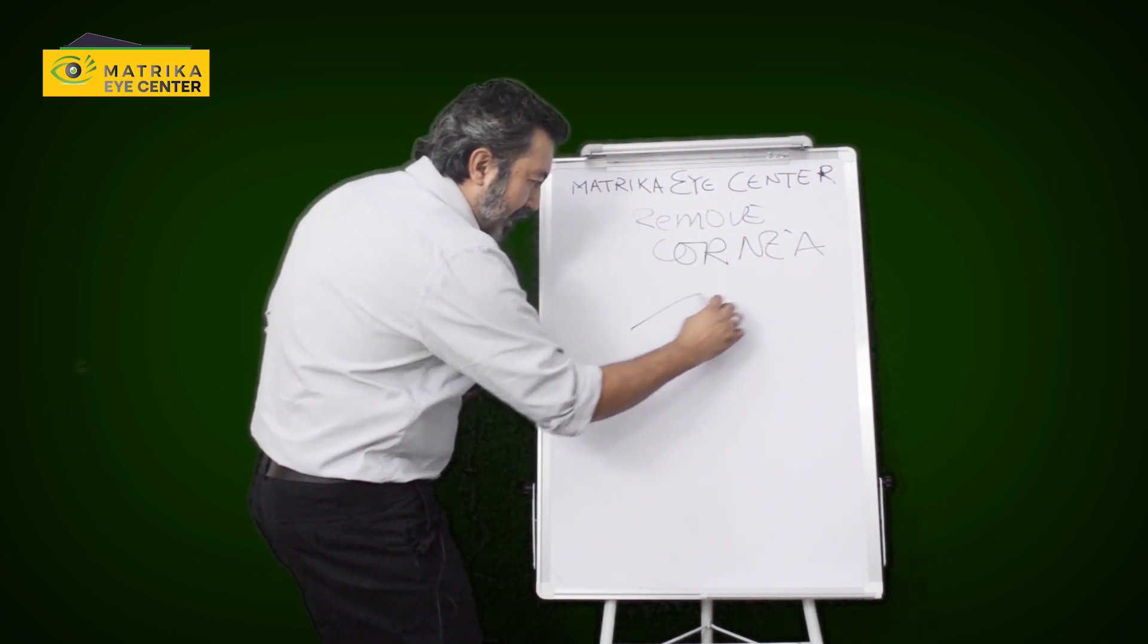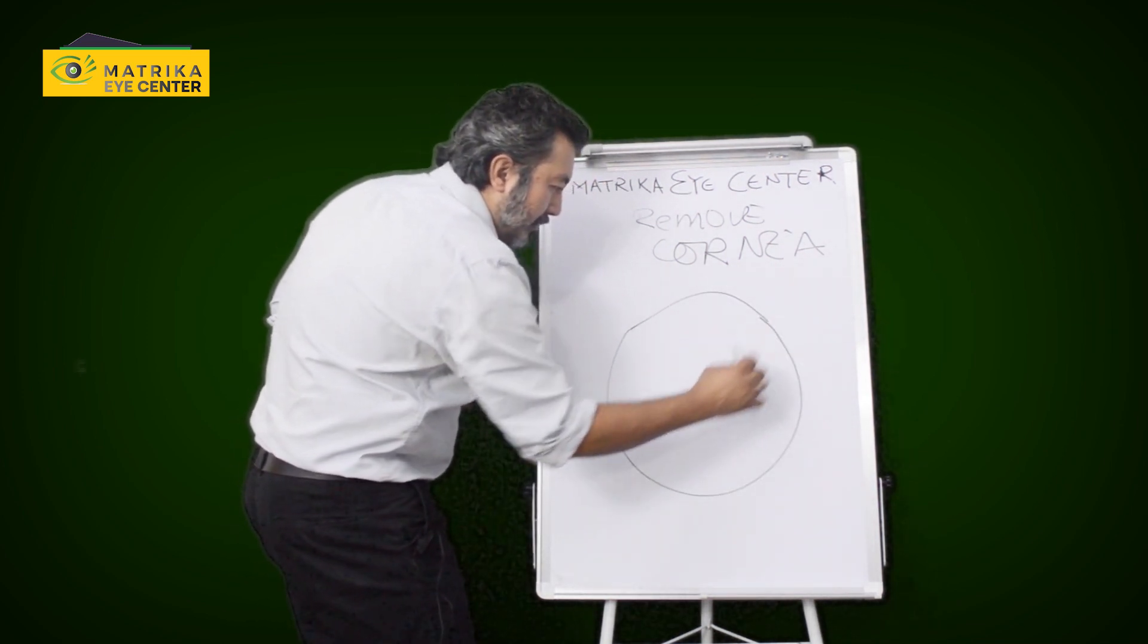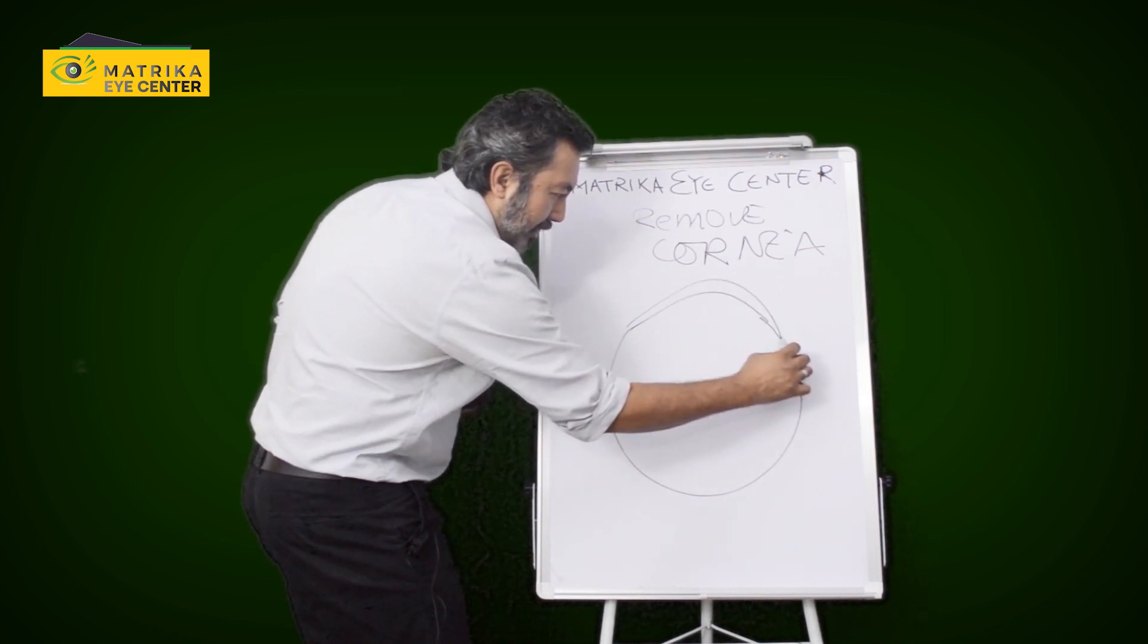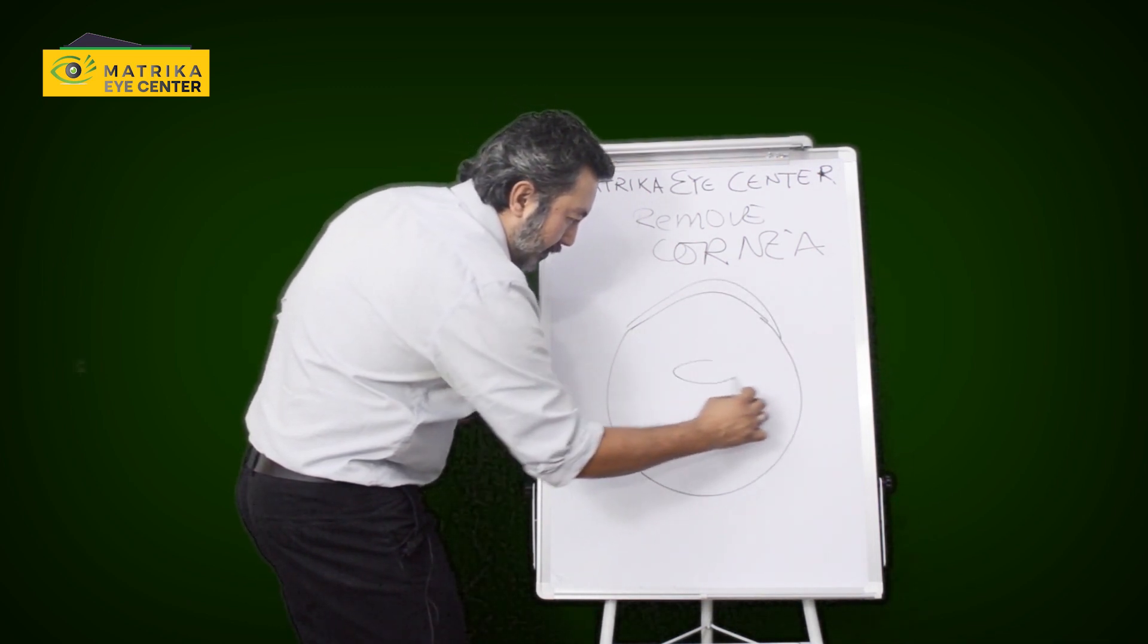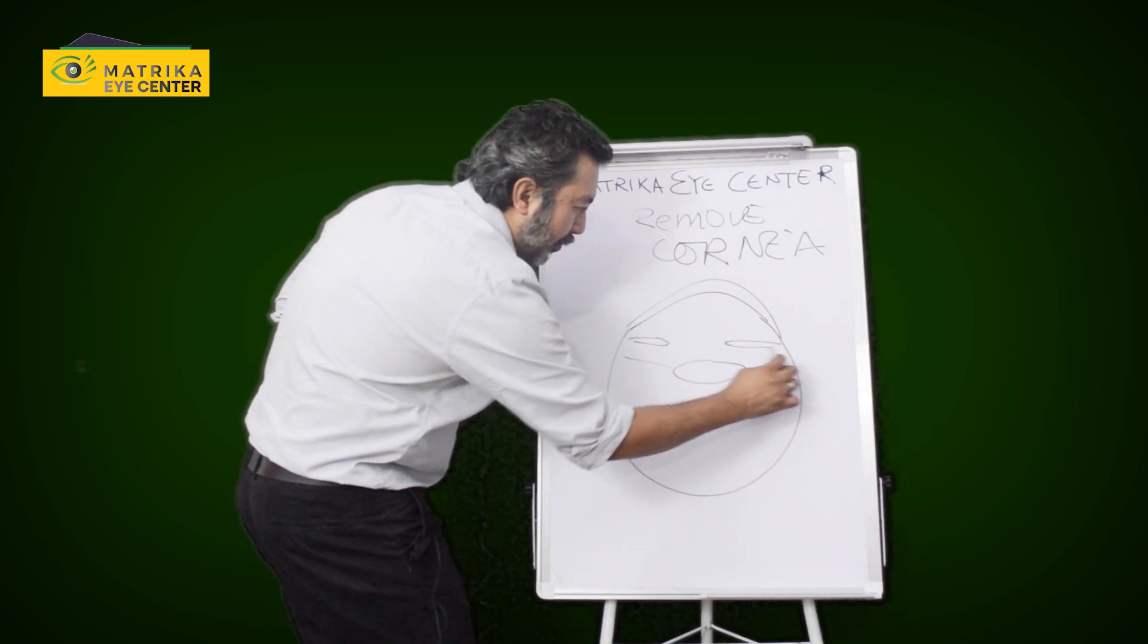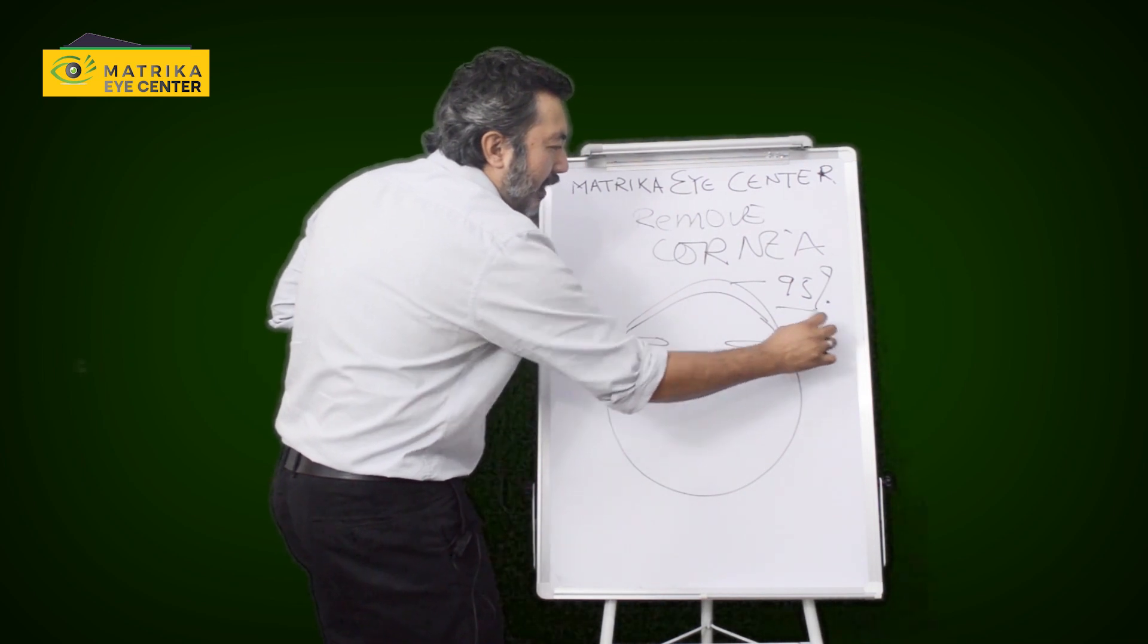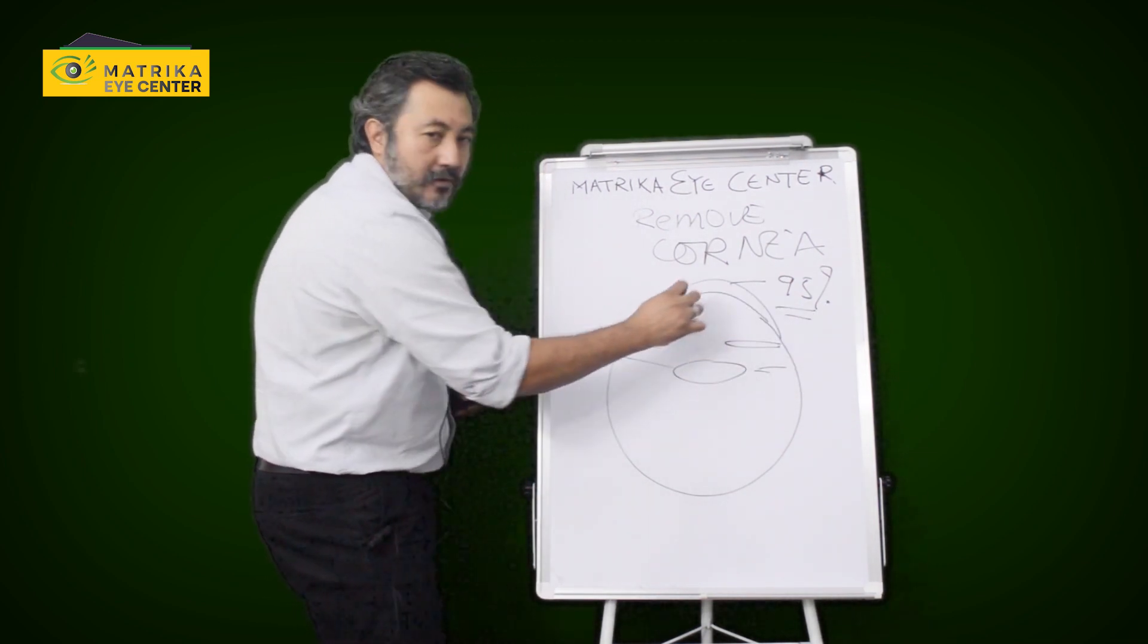So cornea is that front part of your eyeball. So this is your eye. This is your cornea. You have the lens inside. This is the iris and this is the pupil. So 95% of the time, all lasers are done on the cornea.